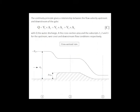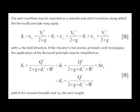The flow above the weir is controlled by two basic equations: the continuity equation and the Bernoulli equation, which may apply to the smooth and short transition.